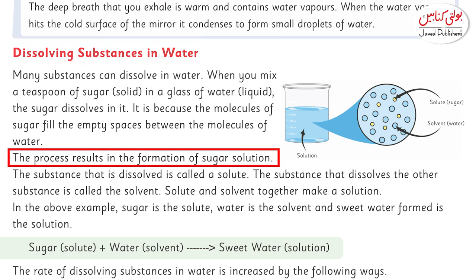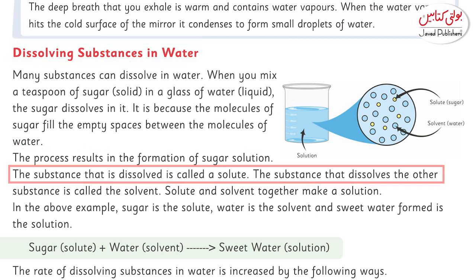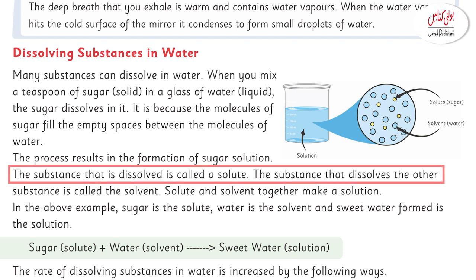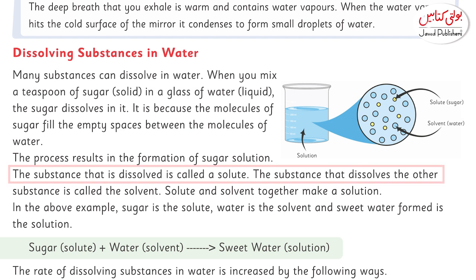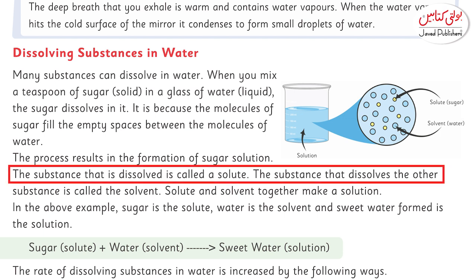This process results in the formation of a sugar solution. The substance that dissolves is called a solute — like sugar, salt, or syrup mixed in water. The substance in which it is dissolved is called the solvent, which is water.